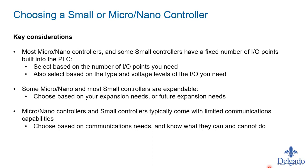Also make sure you're picking the right voltage levels. The micro/nano PLCs usually come a certain way — either 120 volt AC or all 24 volt DC — there's usually not a combination. So know your control voltages. Some are expandable, so choose based on your expansion needs, and look at what communications options those small controllers have available.